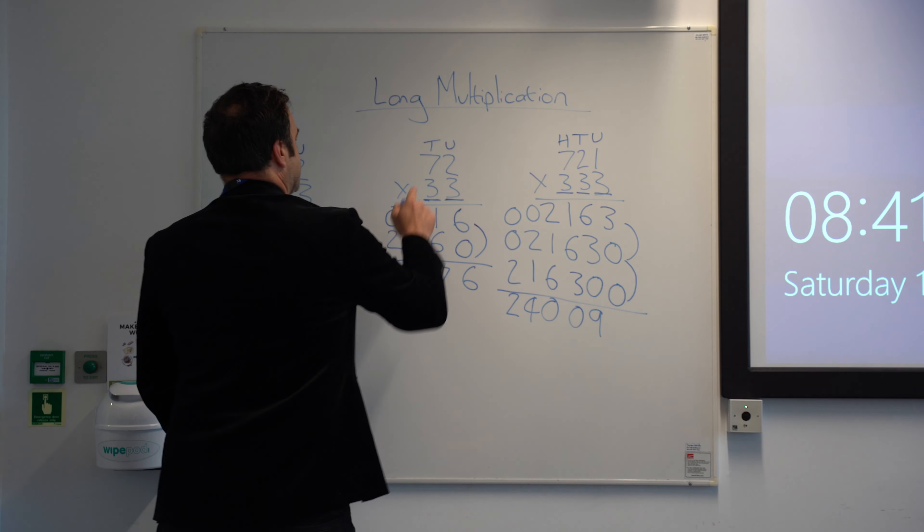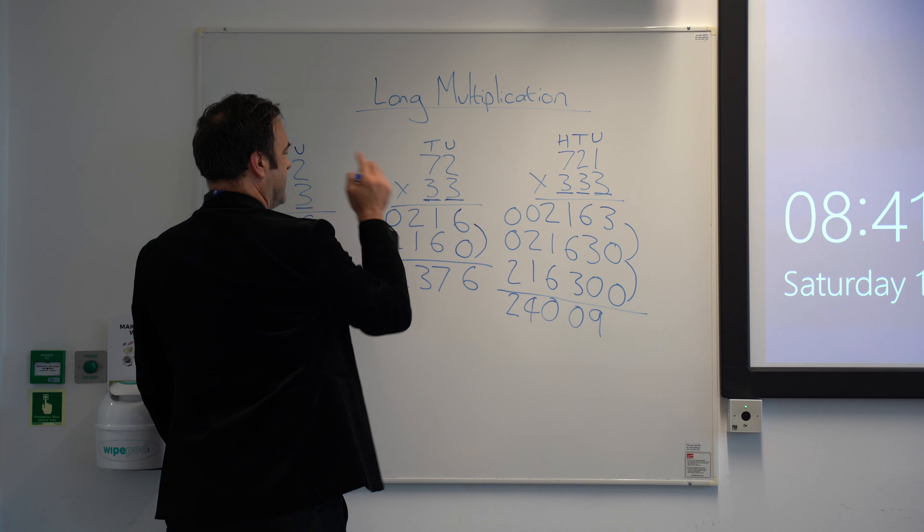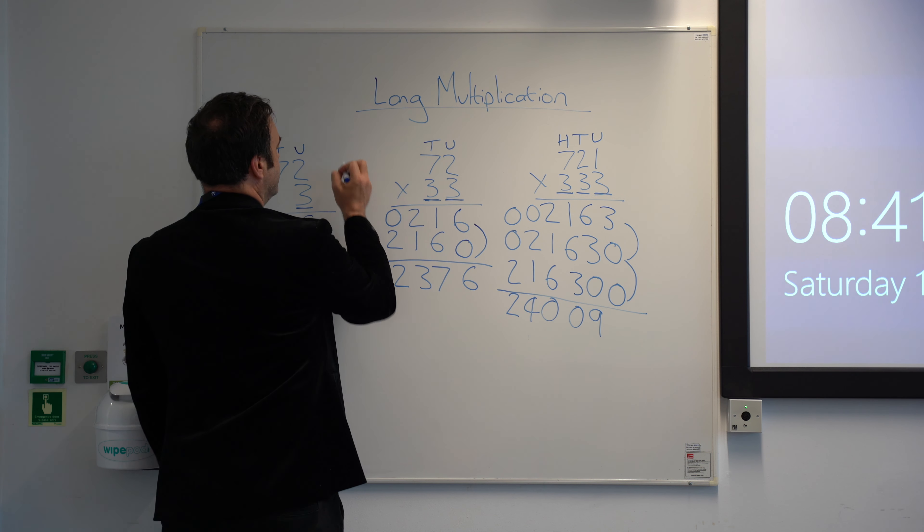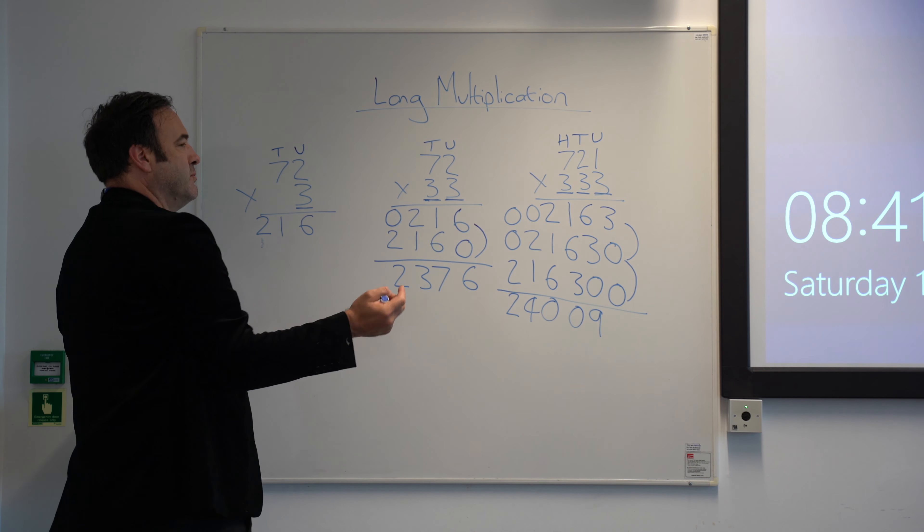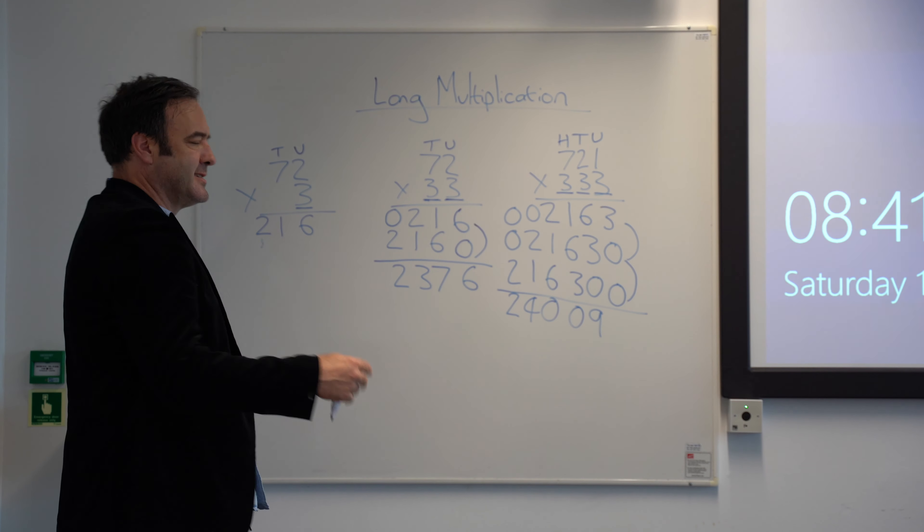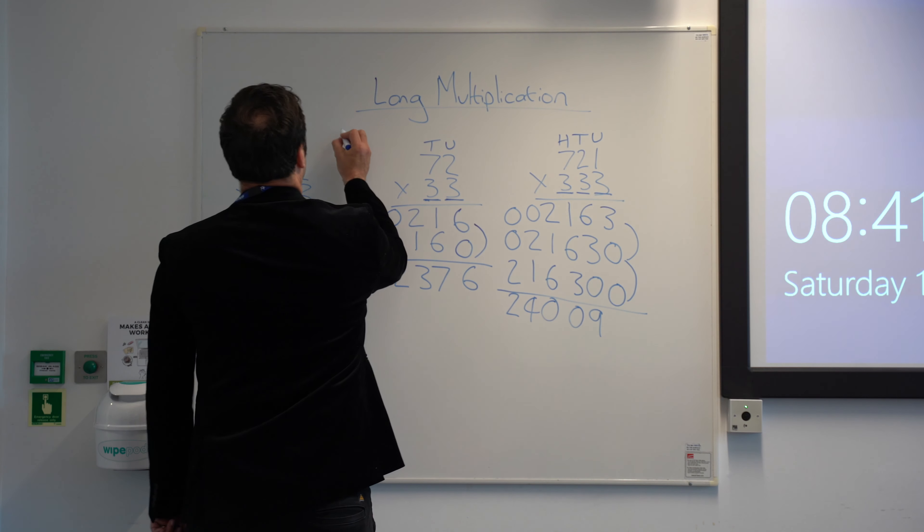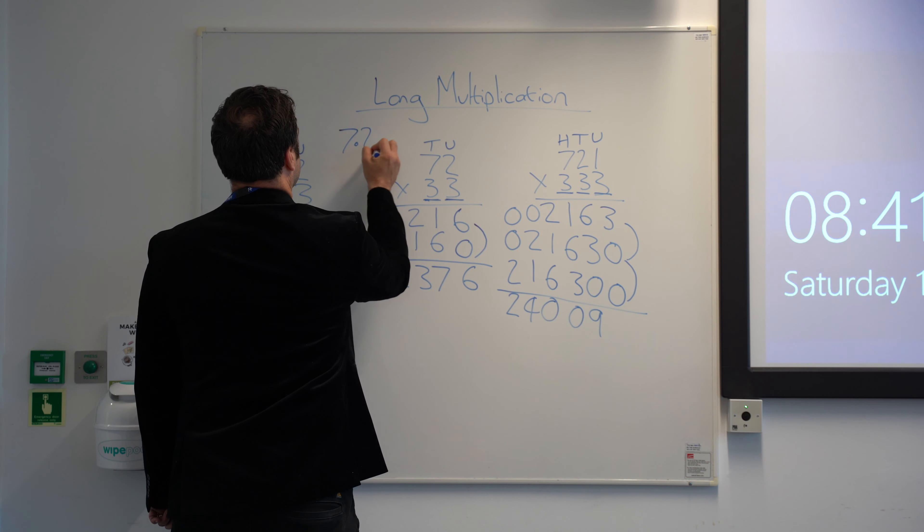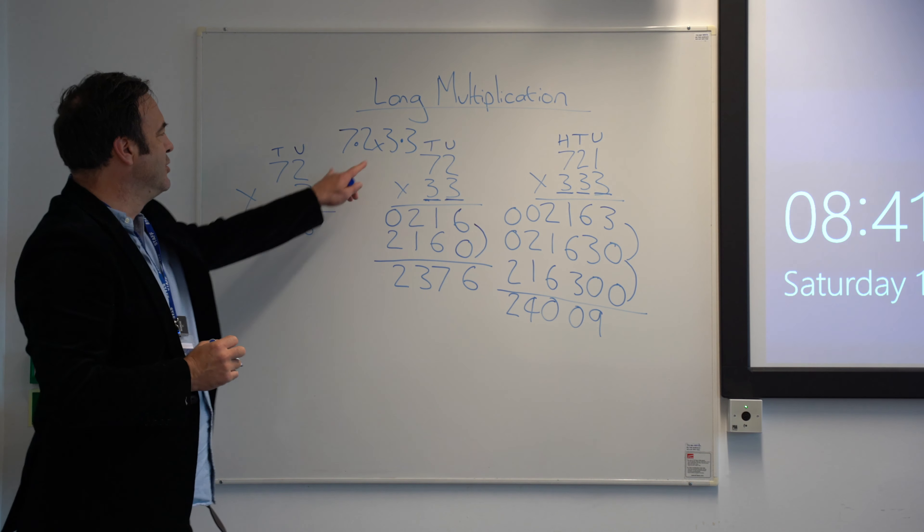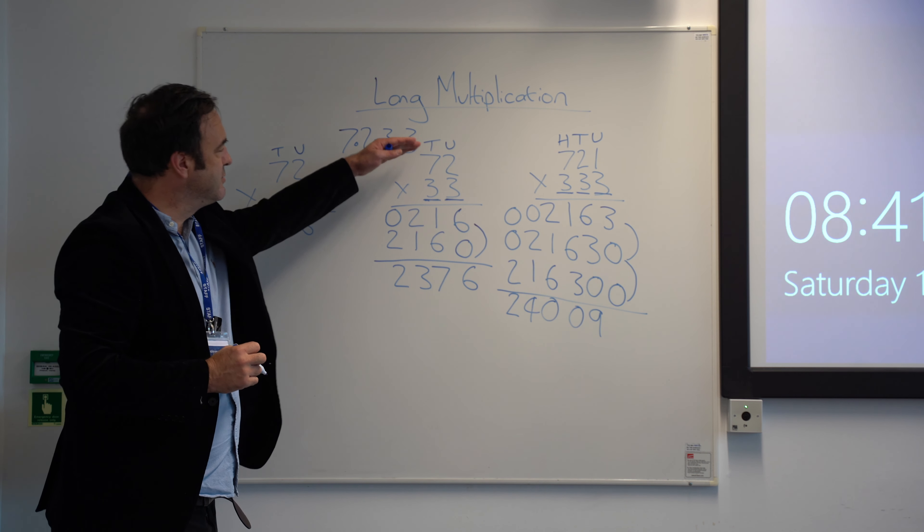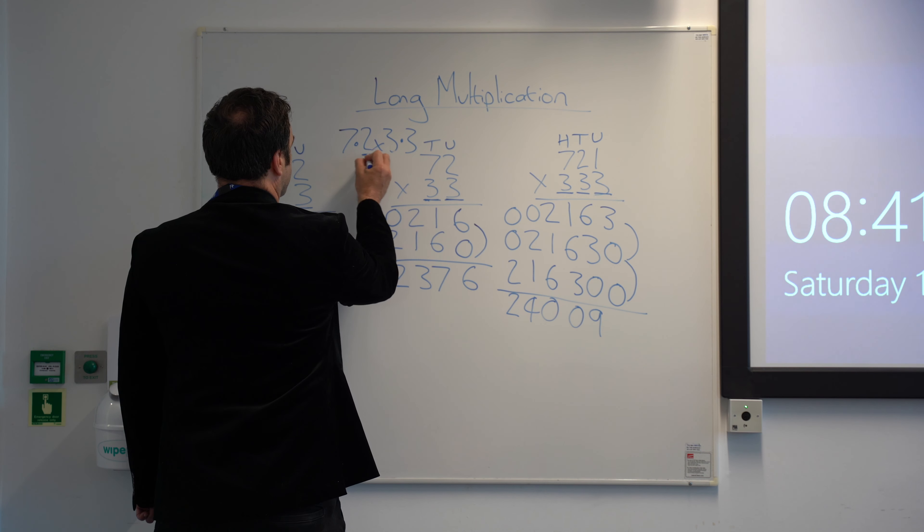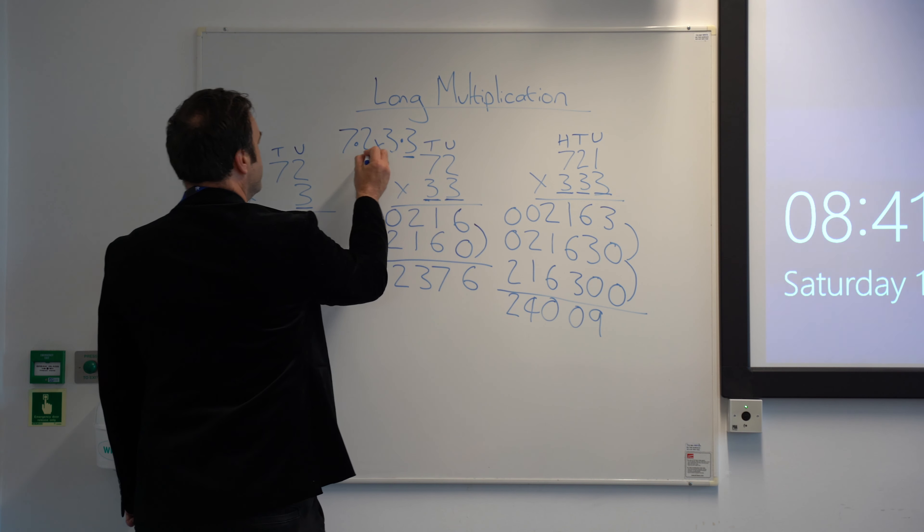But imagine that this problem here, I'm just choosing this one randomly. Imagine that the problem was actually a decimal problem. So we start with this without worrying about decimals. Then when kids first come in, we start introducing them to decimal additions, subtraction, multiplication, and division. Imagine this was 7.2 times 3.3. Now what we'd actually do is ignore the decimal points. We'd still do exactly the same thing here. I always get kids to write the question out and underline the decimal places.